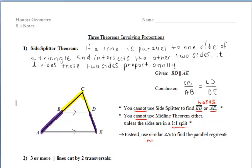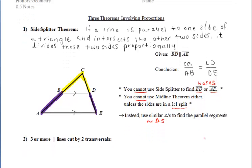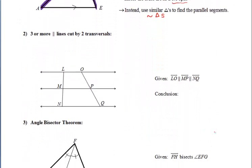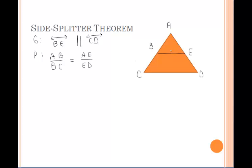If B and D were midpoints, you could use side splitter, but we don't know that. Instead, we'll eventually use similar triangles to find sides BD and AE, as you'll see in a future example. Let's talk about why side splitter works. We're given those two parallel lines, which means the corresponding angles are congruent, and as a result we have two similar triangles.